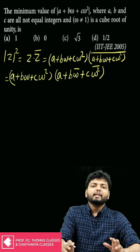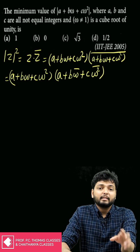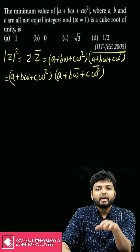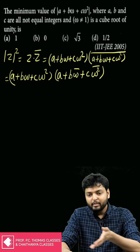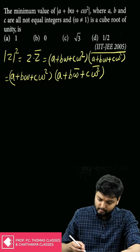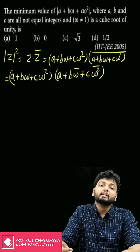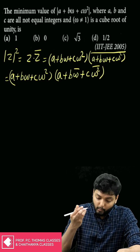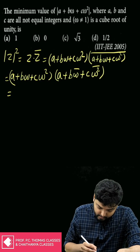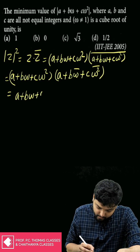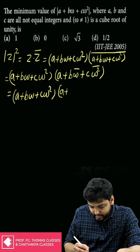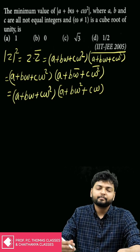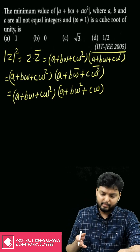We know an interesting fact: ω and ω² are the complex conjugates of each other. The conjugate of ω is ω², and the conjugate of ω² is ω. You can easily see this on the Argand plane. So we replace ω̄ with ω² and ω̄² with ω, giving us (a + bω + cω²)(a + bω² + cω).